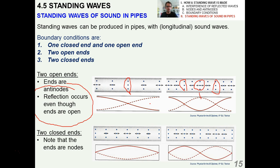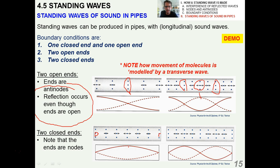If you have two closed ends, note that the ends are nodes themselves. So you have nodes on the end where there's no movement of air molecules, and then maximum movement halfway in between corresponding to the antinodes as usual. You need to be familiar with how the movement of molecules can be modeled by a transverse wave, even though it really isn't a transverse wave.